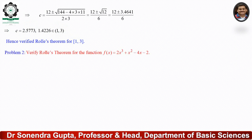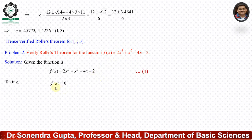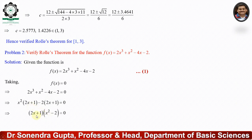Now we discuss one more question: verify Rolle's Theorem for the function f(x) = 2x³ + x² − 4x − 2. In this question the interval is not defined, so we find the interval from the given function by setting f(x) = 0: 2x³ + x² − 4x − 2 = 0. Factorizing: x²(2x + 1) − 2(2x + 1) = 0, giving (2x + 1)(x² − 2) = 0. The roots are x = −1/2, x = −√2 ≈ −1.414, and x = √2 ≈ 1.414.